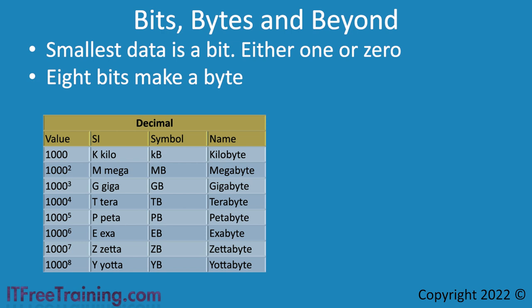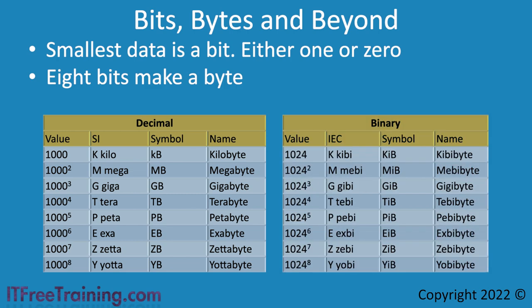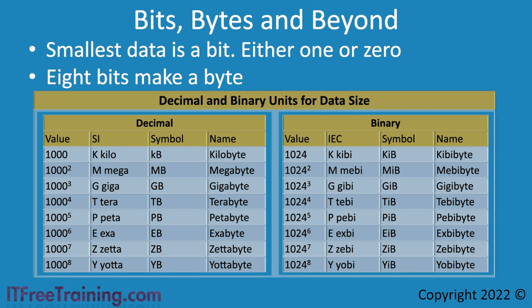Computer stored data is either a 1 or a 0, giving us two possible values. This forms the basic building block for data inside a computer. For this reason, data inside a computer is often grouped into 1,024 byte blocks rather than 1,000 byte blocks as shown.